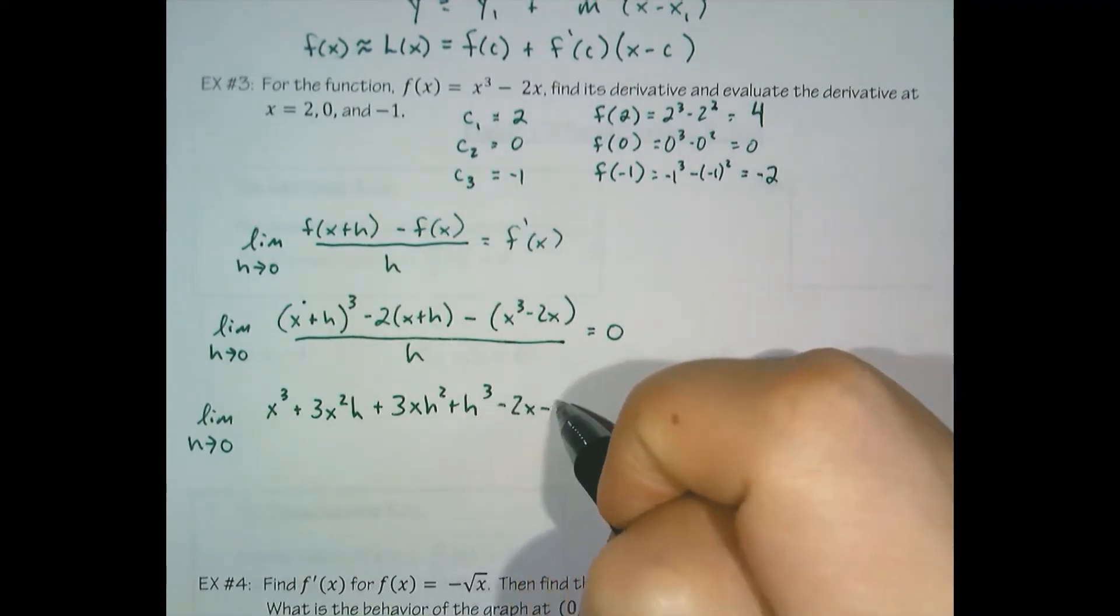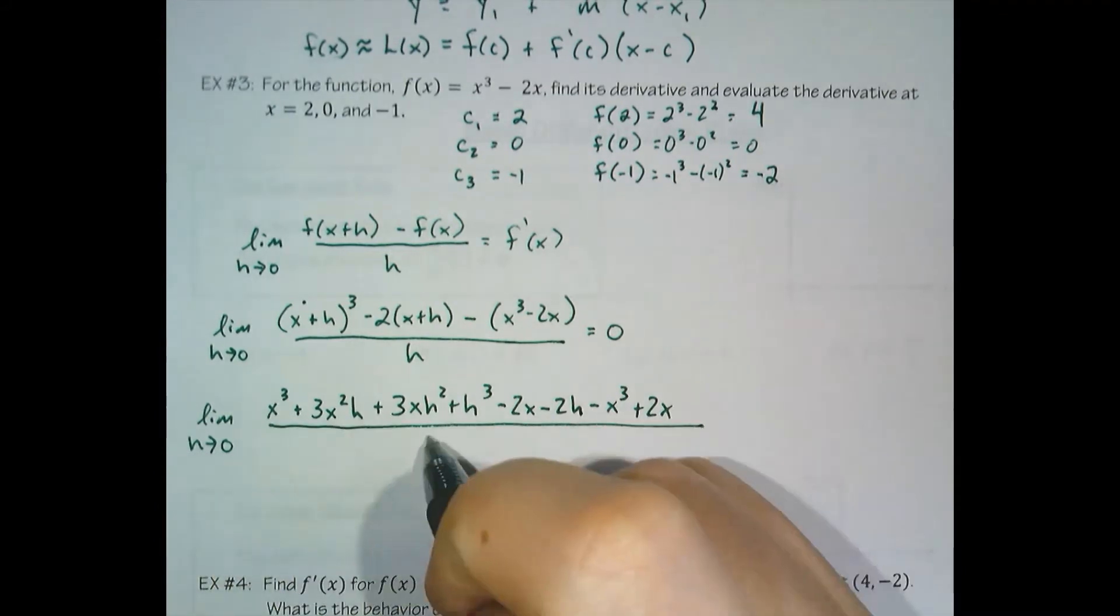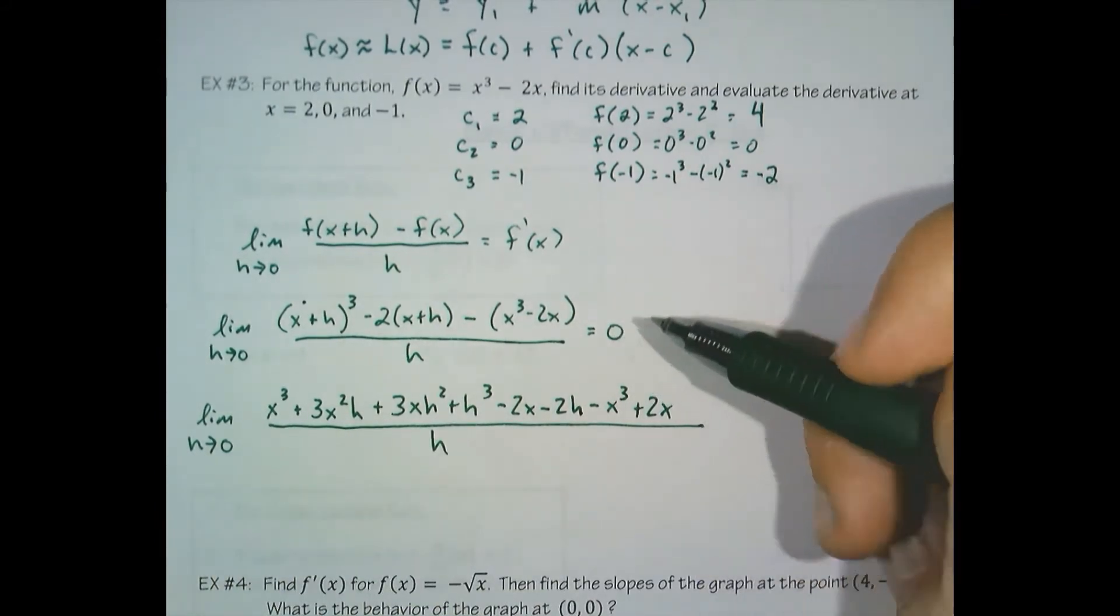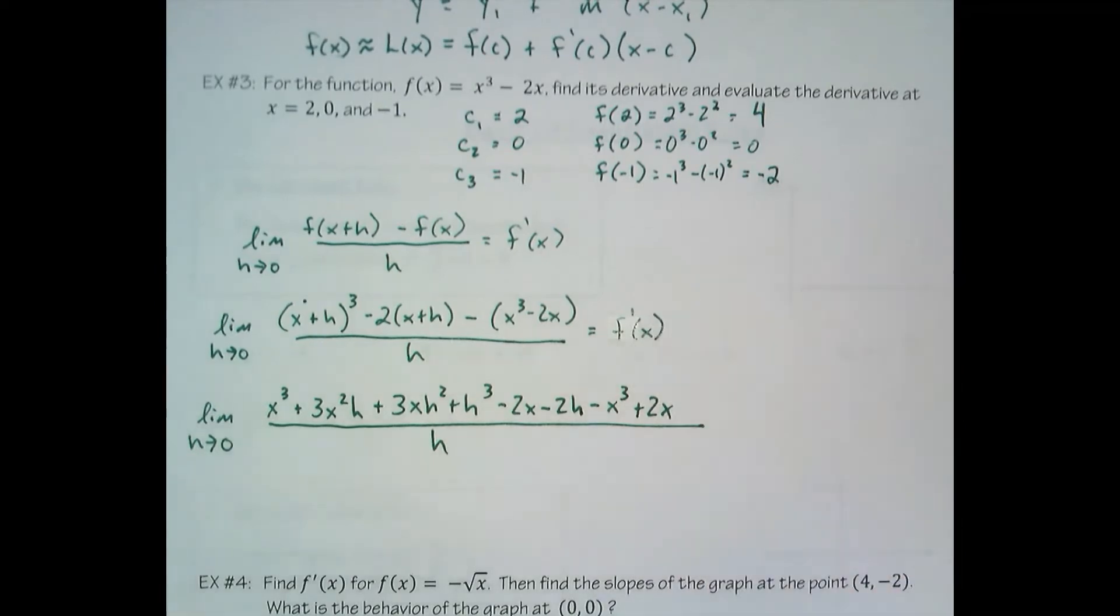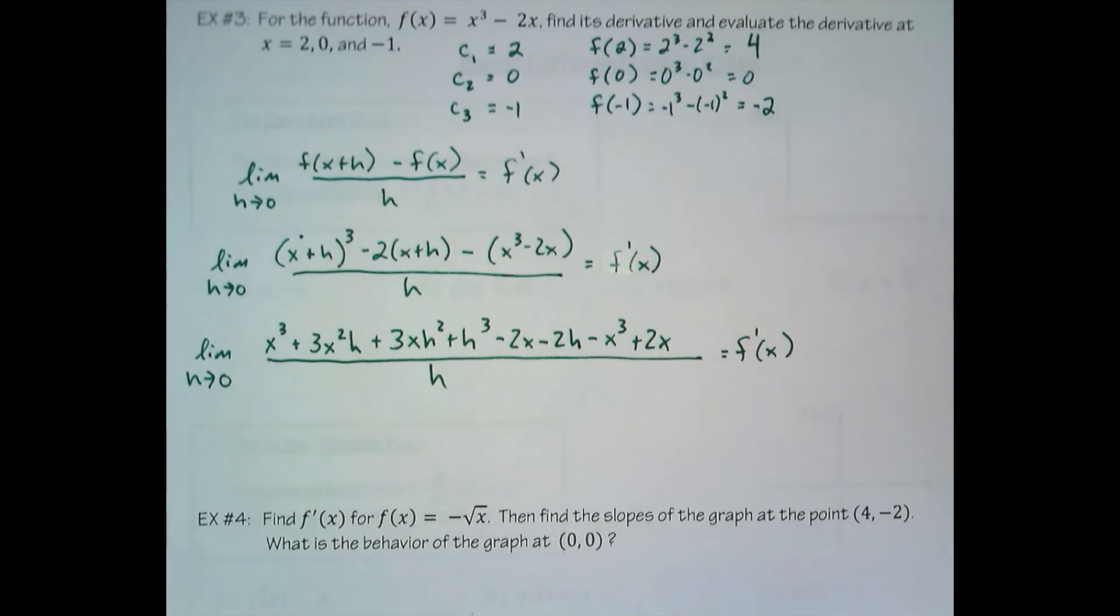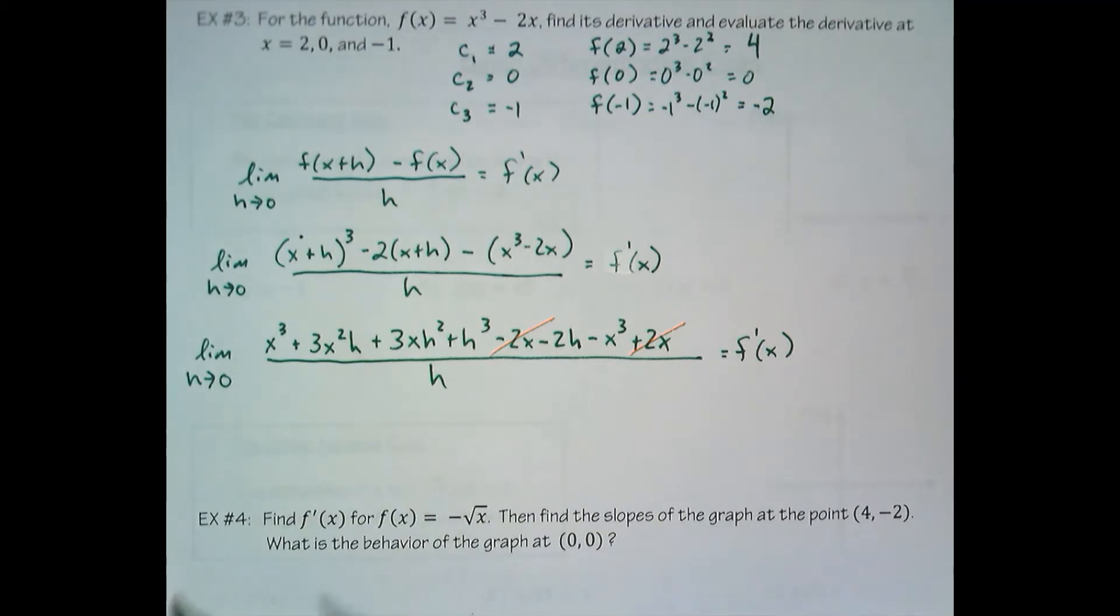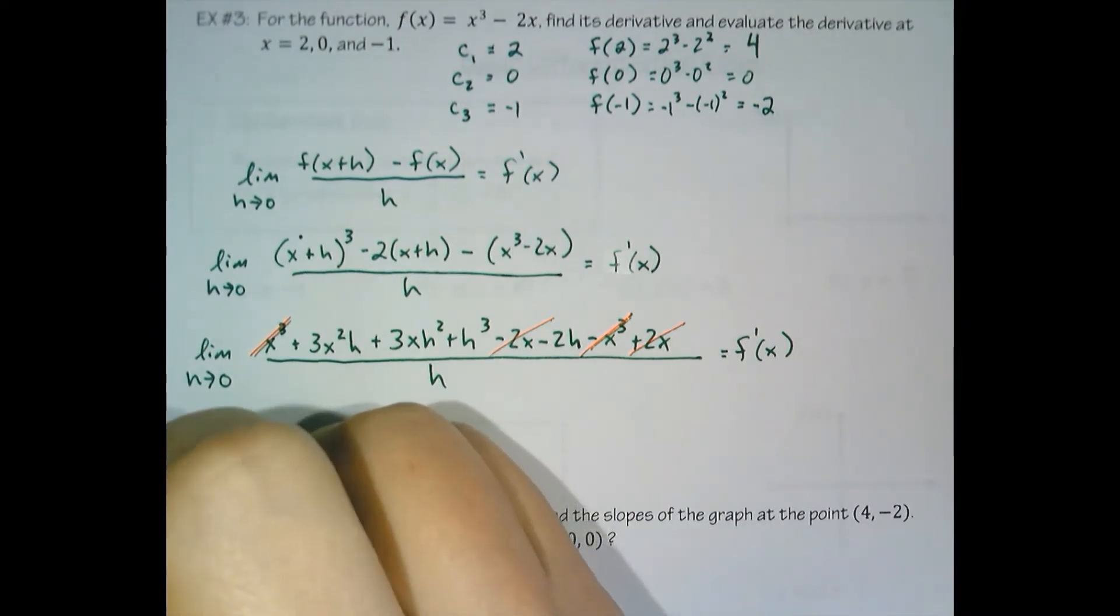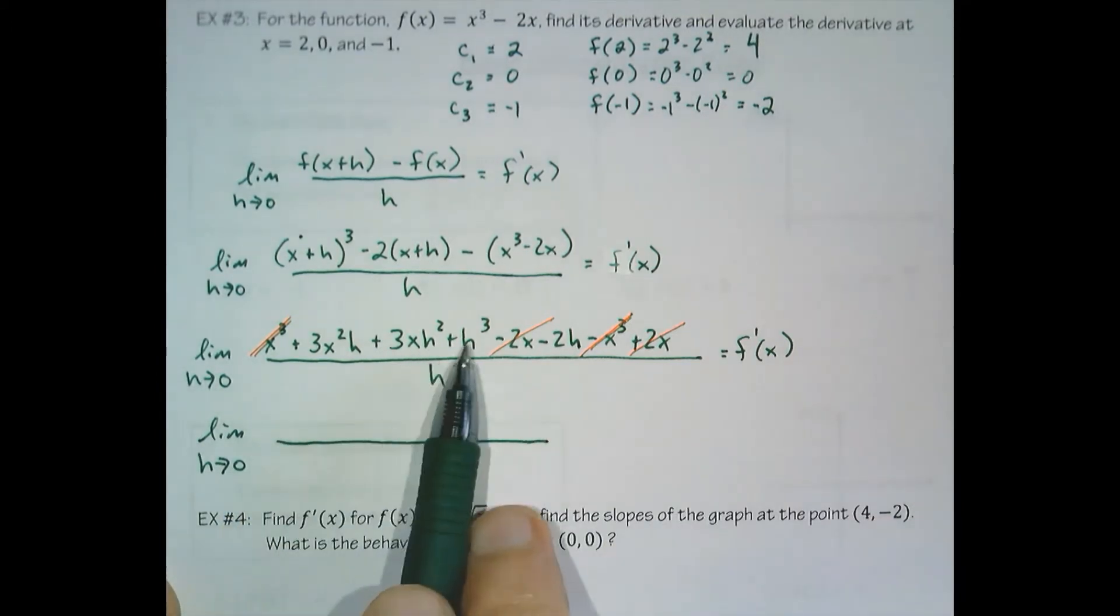Minus two x minus two h minus x cubed plus two x over h. And then we want to go through the process of canceling the things that cancel. We see negative two x cancels positive two x, and x cubed cancels with negative x cubed.